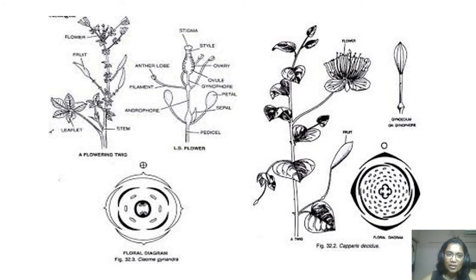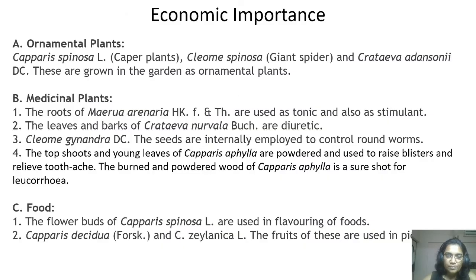Here is the example with some pictures of Capparis species. This is the Capparis and this one is pandri tilwan — Cleome gynandra. So let's talk about the economic importance of this family.